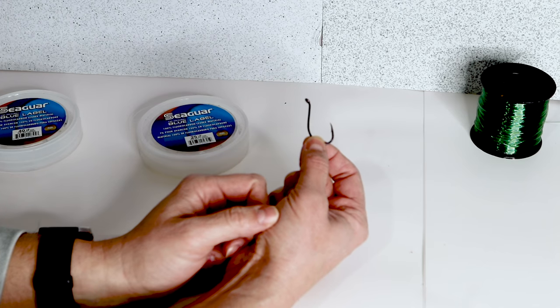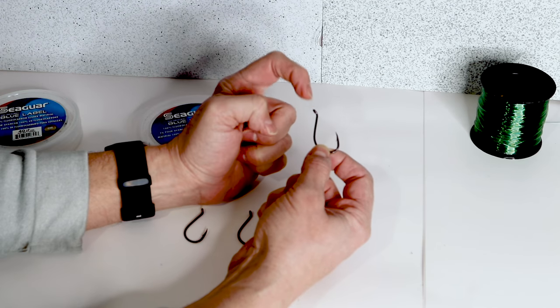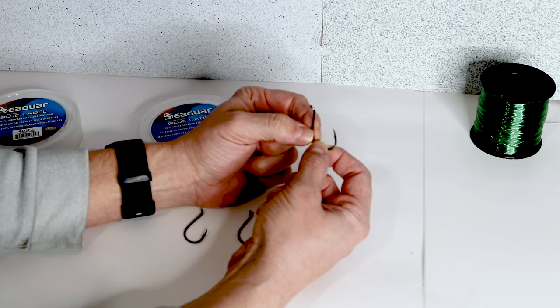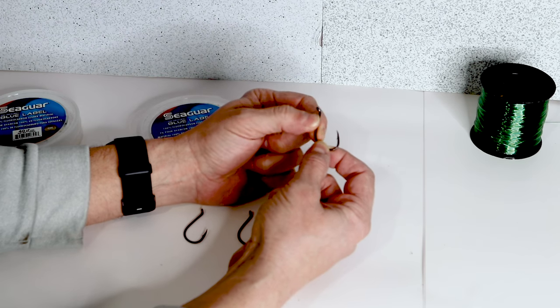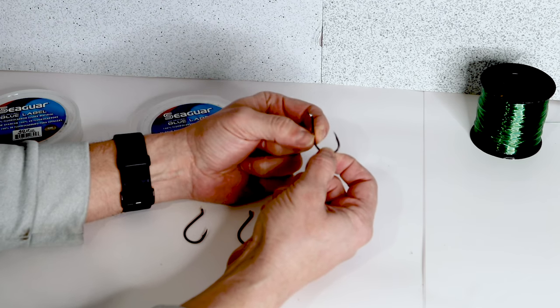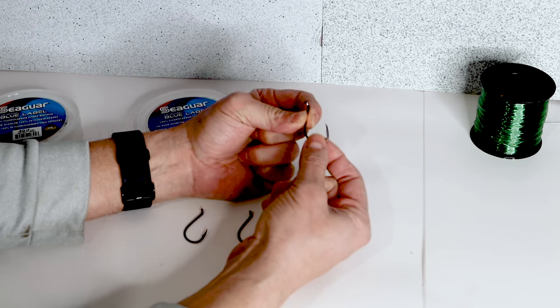When you're snelling, you're not tying to the eye of the hook. You're tying directly to the shaft. You're coming through the eye, tying directly to the shaft, which is distributing that load across the hook, as well as providing what I consider a straight pull point on the hook.